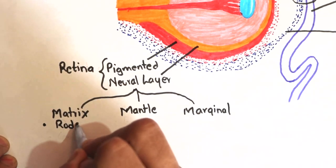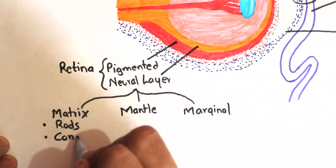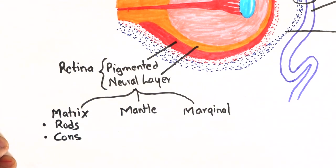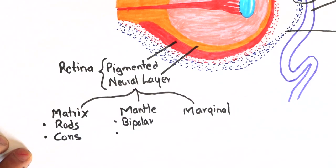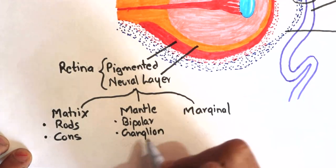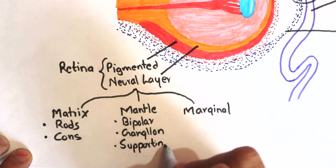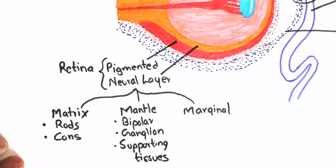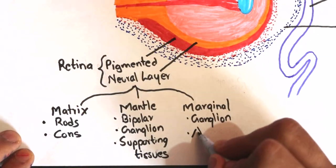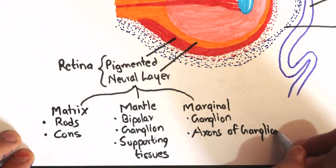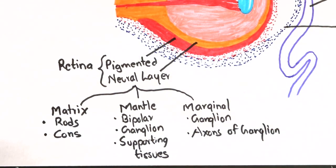Cells of the matrix layer form the rods and cones, which are the photoreceptors of the eye. Cells of the mantle layer form bipolar cells, ganglion cells, and supporting tissues. Cells of the marginal layer also form ganglion cells and their nerve fibers, which ultimately form the optic nerve.